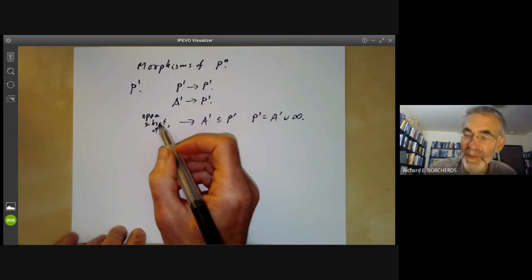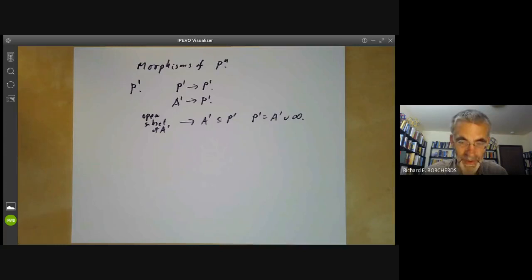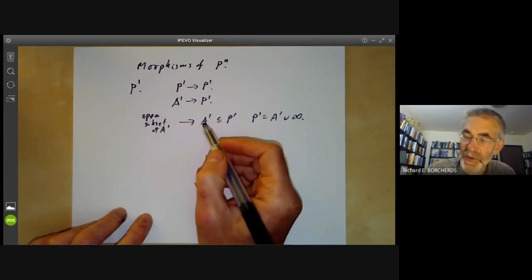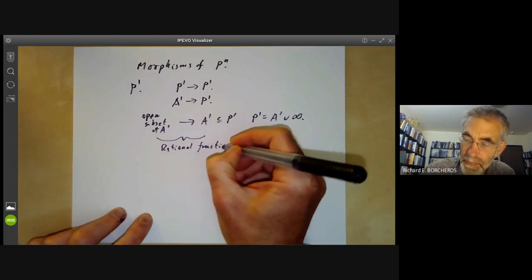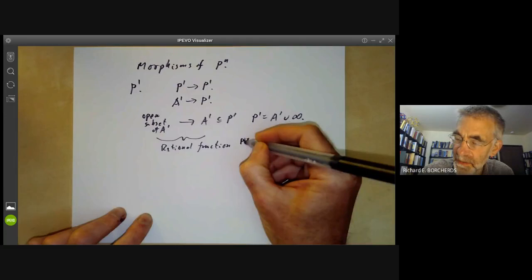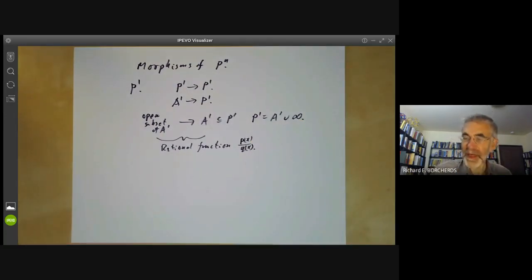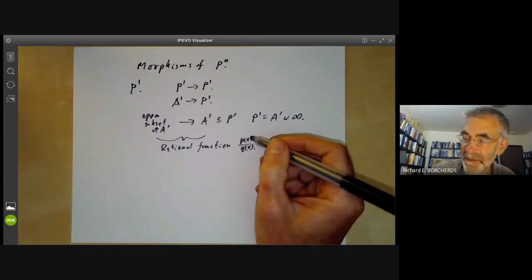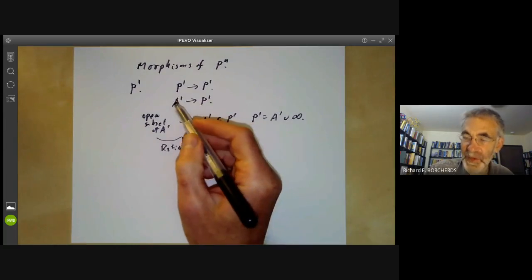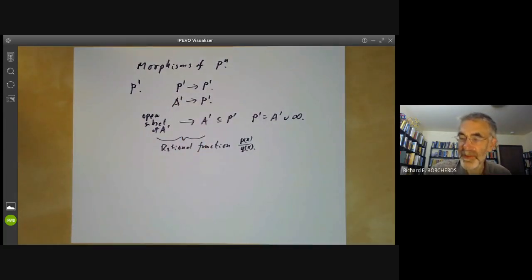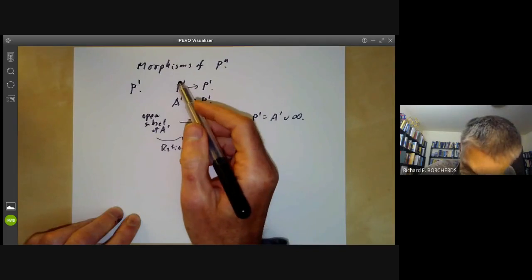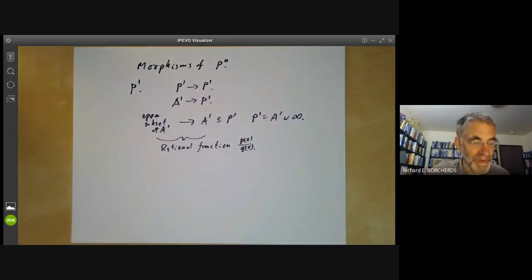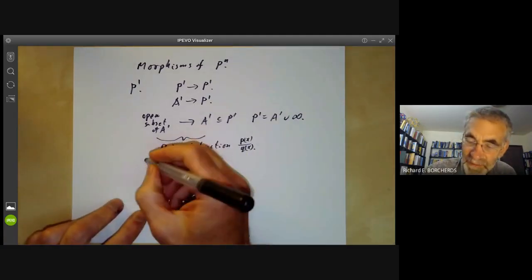Now this means we've just got a regular map on an open subset of A¹ and this is just given by a rational function p(x)/q(x). Conversely, if you're given a rational function giving a map from an open subset of A¹ to P¹, then this can be extended to a map from P¹ to P¹. So this gives us all the morphisms from P¹ to itself.